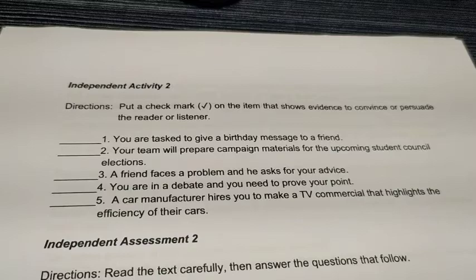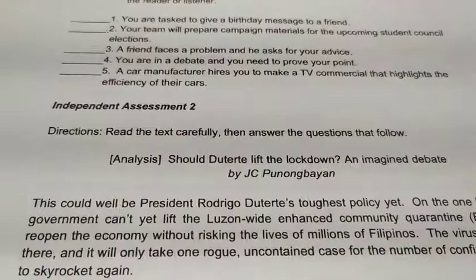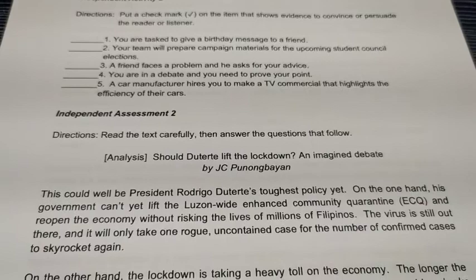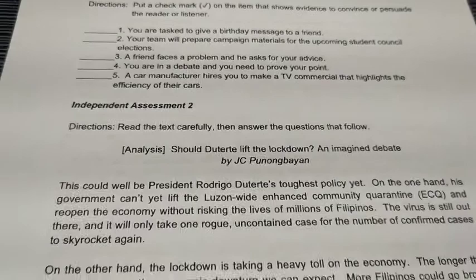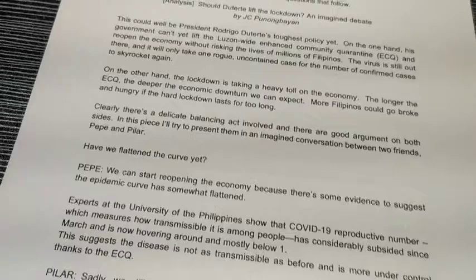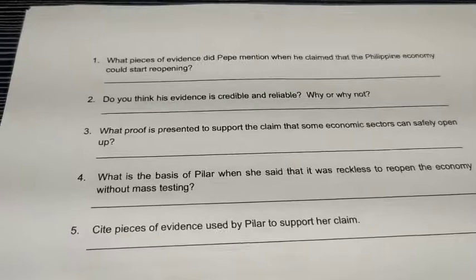For Independent Assessment 2, read the text carefully, then answer the questions that follow. The text is an analysis of 'Should the Turtle Lift the Lockdown?' — an imagined debate by J.C. Punong Bayad. After reading the dialogues up until number 7, the questions will be located on page number 8, and you will answer them after reading the text.